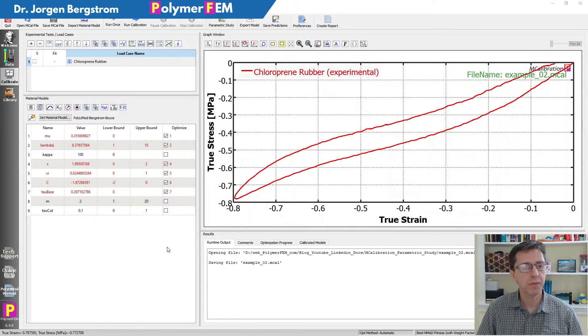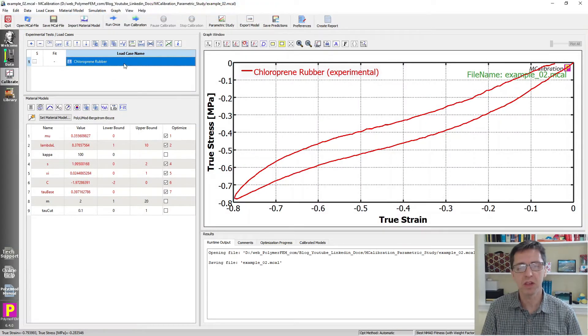So I have an mCalibration window here and I have some experimental data. It's just one single load case here, and then I have the PolyUMod-Bergstrom-Boyce model.